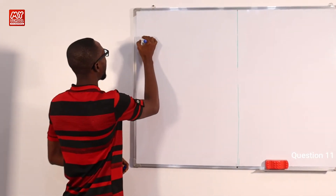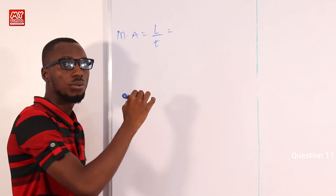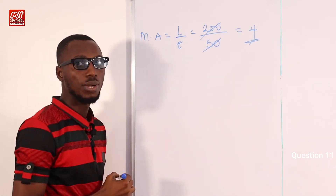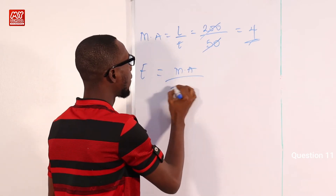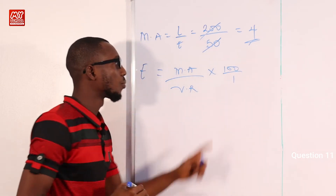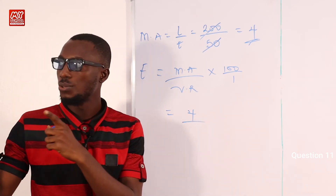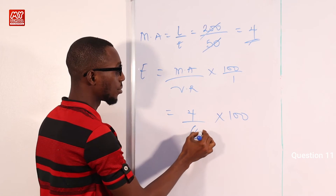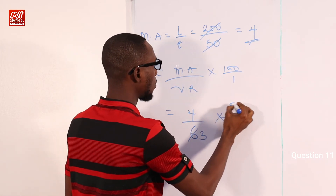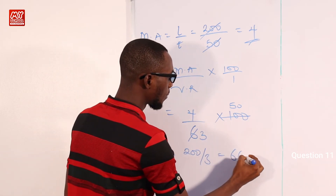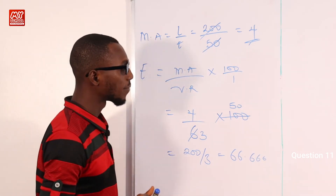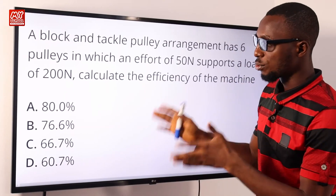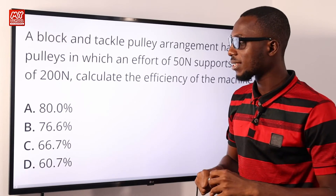Efficiency = mechanical advantage / velocity ratio × 100%. Mechanical advantage = load / effort = 200 / 50 = 4. Velocity ratio equals the number of pulleys = 6. Therefore, efficiency = 4/6 × 100% = 66.67%, approximately 66.7%. Going back to the options, option C — 66.7% — is correct.